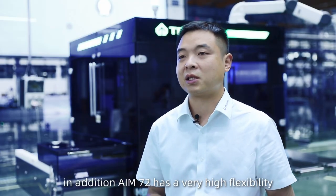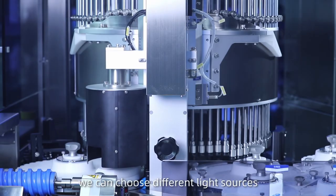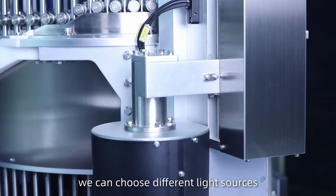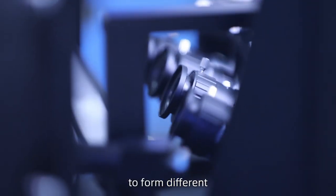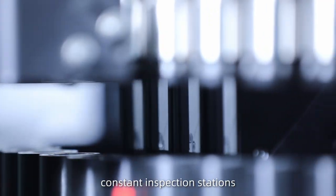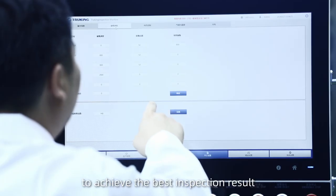In addition, AIM 72 has a very high flexibility. We can choose different light sources, cameras and industrial computer configurations to form different custom inspection stations according to customers' needs to achieve the best inspection result.